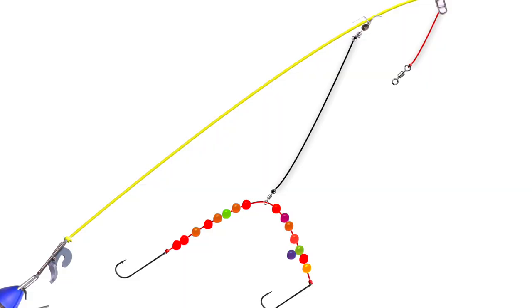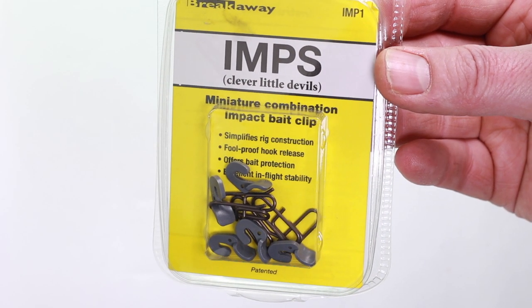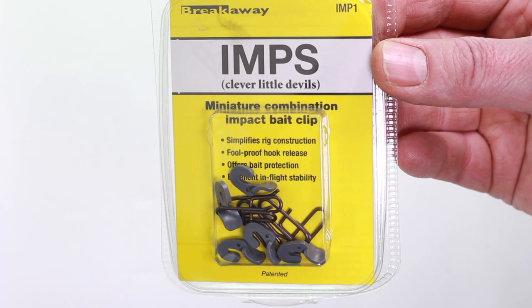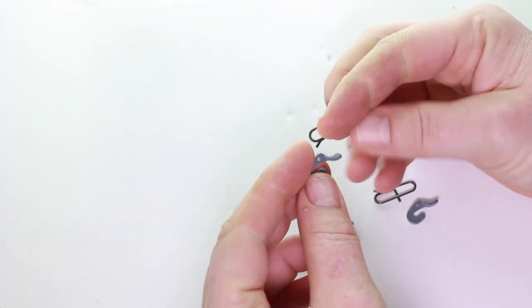So you're going to be using a wishbone, but it uses the cascade swivel to put the whole bait right on the seabed. I'm going to use these imps on this rig as well. I haven't used these too much, but we're going to take a look at how to put those on. They're a little bit fiddly, these imps.